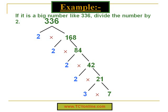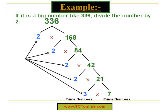We can see that 7 and 3 are both prime numbers. So the prime factors of 336 are 2 × 2 × 2 × 2, which is 2 to the power of 4, times 3 times 7. Let's check this: 2⁴ is 16, and 16 times 3 times 7 equals 16 times 21, which gives us 336. So our answer is correct — the prime factors of 336 are 2⁴ × 3 × 7.